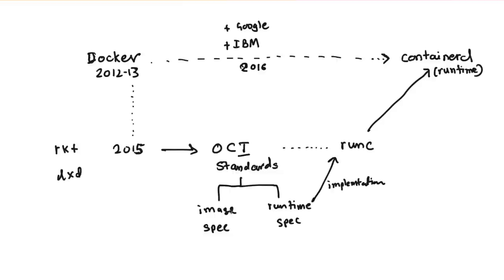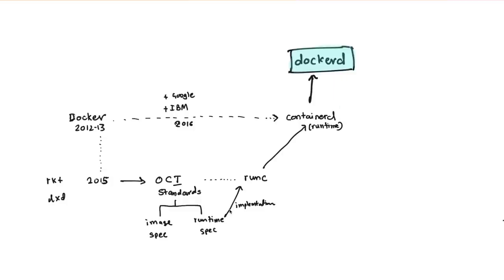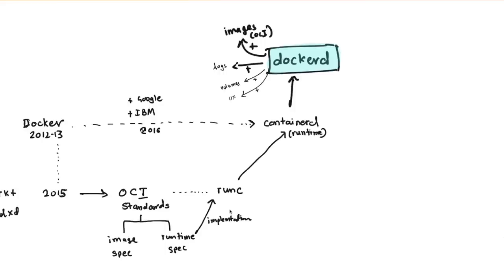That's the gap that containerd fills. On top of that, Docker has its own daemon which does a lot more things. When it has to run containers, it delegates to containerd and then to runc. Docker also gives you a way to build images and manage logs, volumes, the UX components, and tooling to install and set up container environments using Docker Desktop.